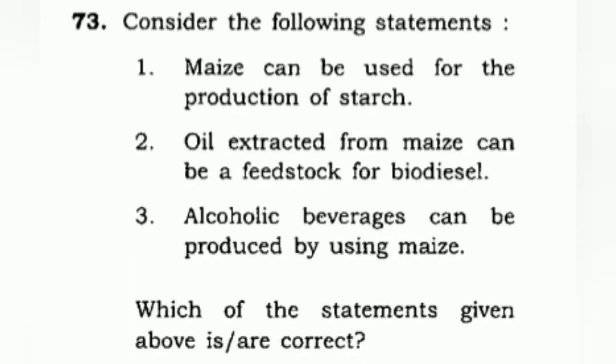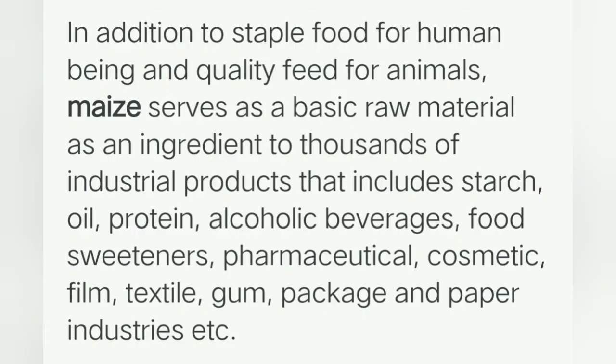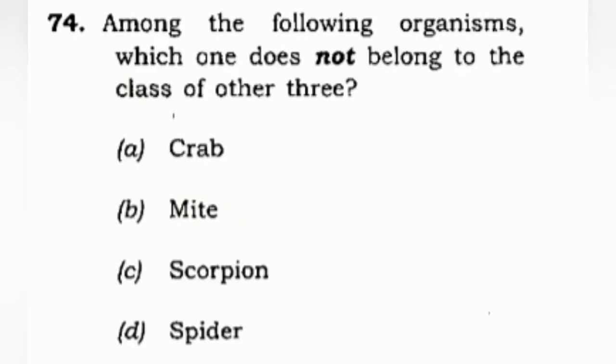The 73rd question considers the following statements about the uses of maize. Maize can be used for the production of starch; oil extracted from it can be used as a feedstock; and alcoholic beverages can be produced using maize. Going through all the options, you will conclude that the correct answer is D: one, two, and three. You need to revise the raw materials and uses of crops accordingly.